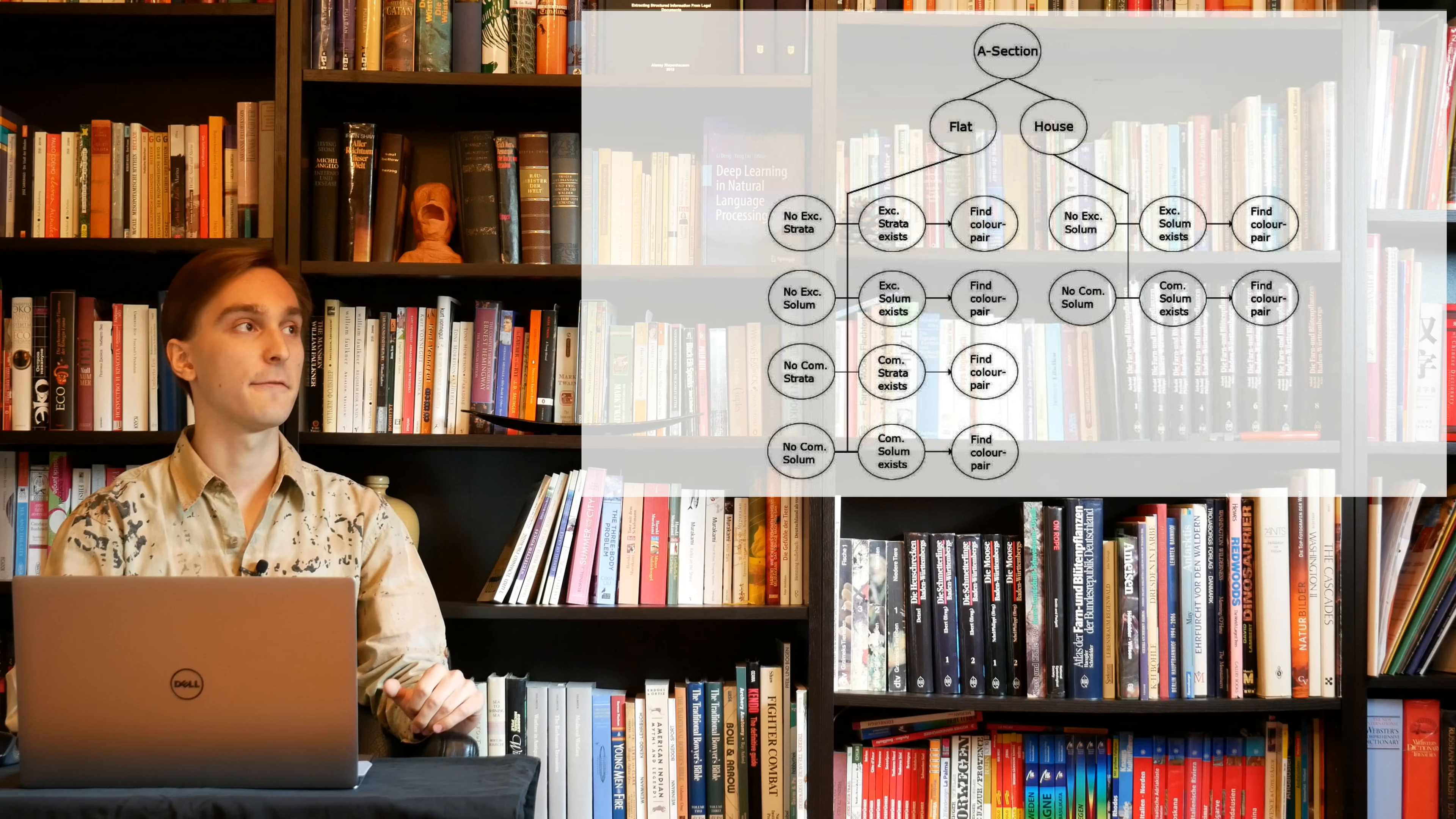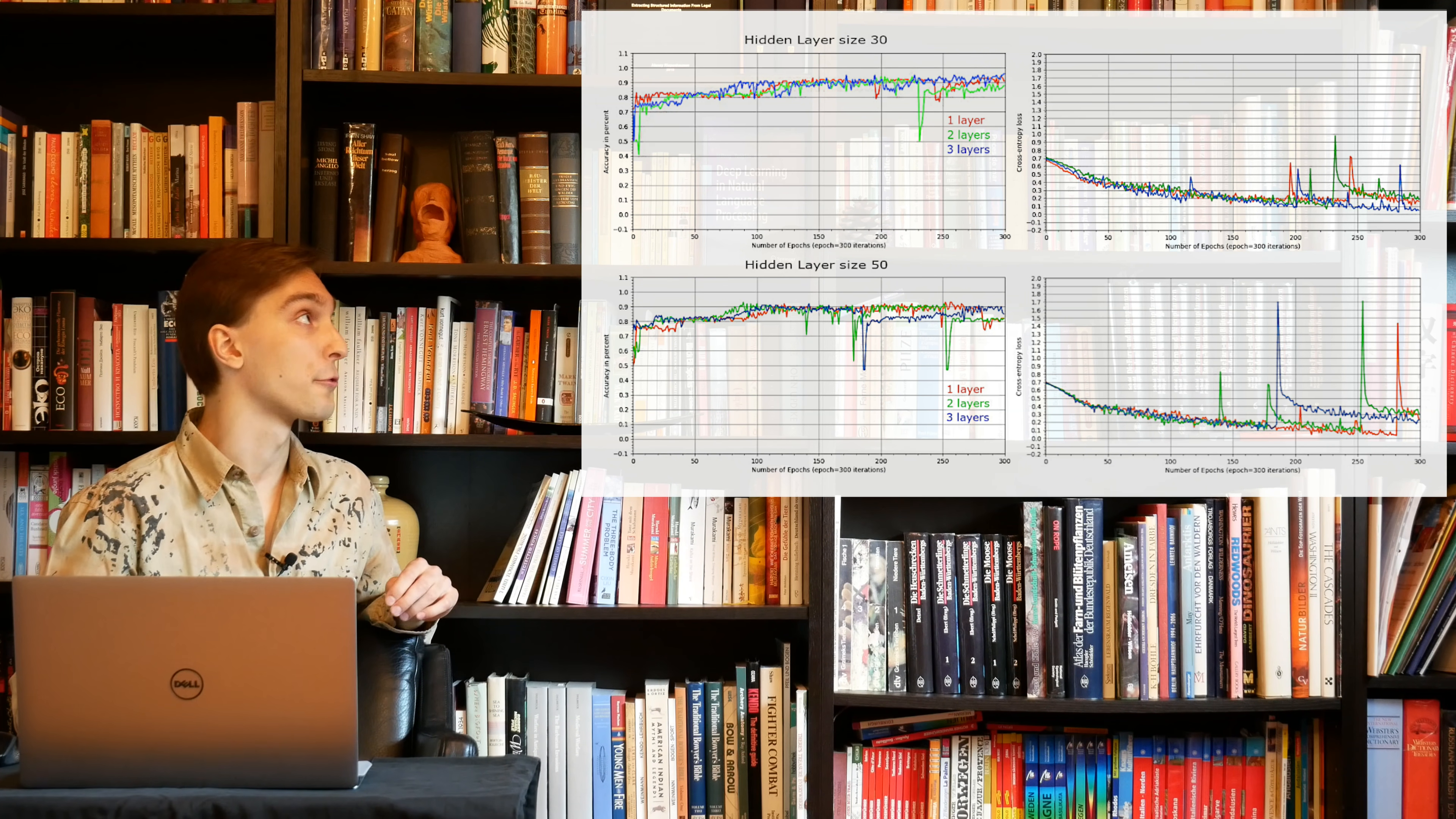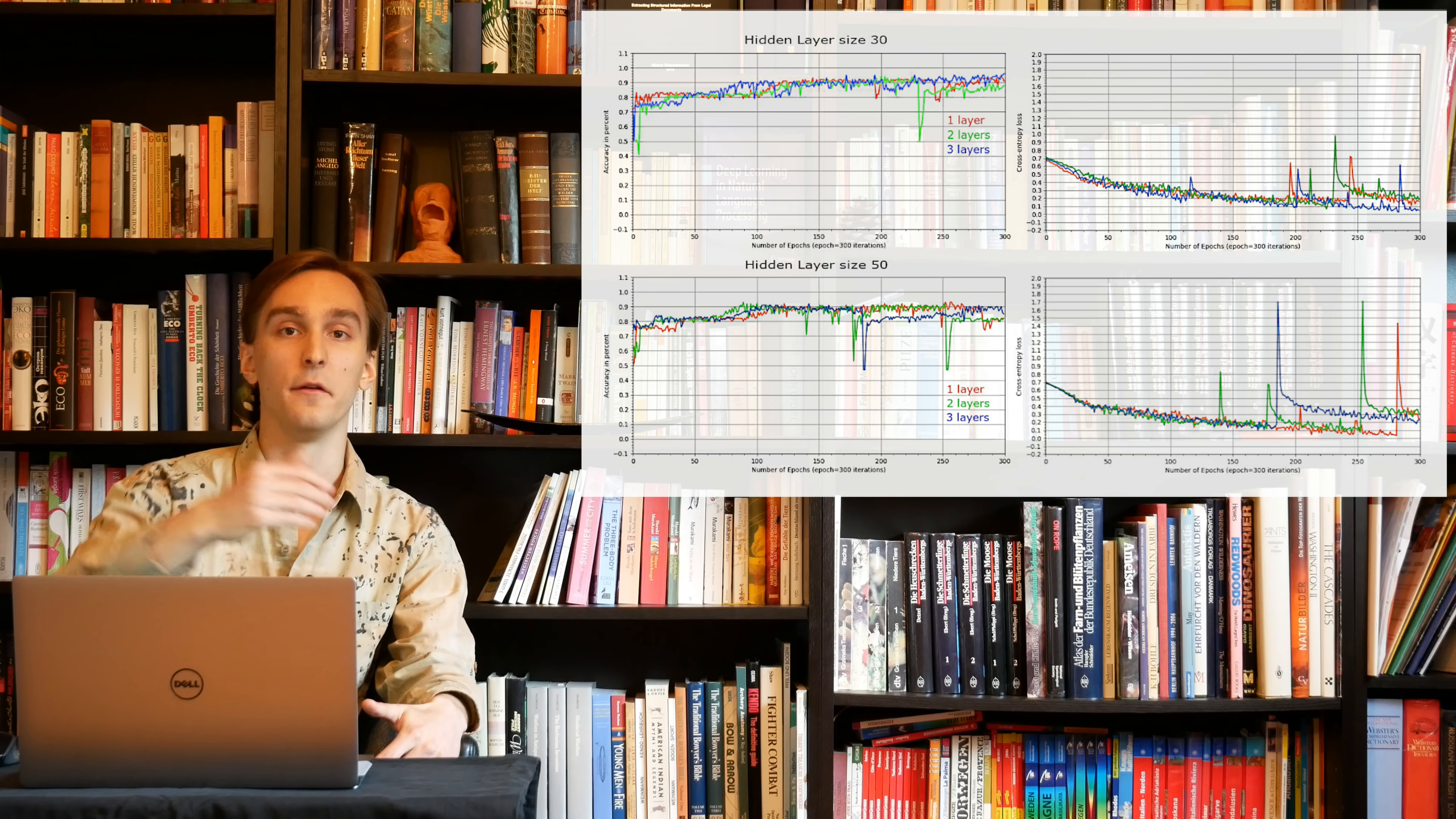So for classifying flats and houses, we use different types of architectures. We have layer size of 30, layer size of 50, and a different number of layers. So one layer, two layers, three layers. Now obviously, as you can see, it doesn't really matter what layer architecture you choose, you always end up with similar results. But the results themselves are pretty promising. So you have accuracies of 90 plus percent. And I can certainly argue, you can certainly put a strong argument here that if you had, let's say, 4,000 or 40,000 labeled A sections instead of 400, you could push that number like even further.